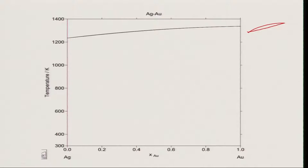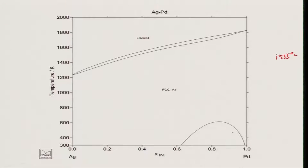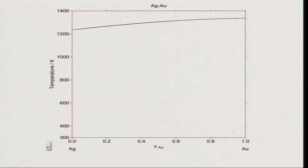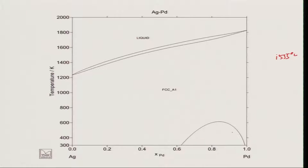The phase diagram between gold and silver looks like a lens — an isomorphous type — but because the melting temperature difference between gold and silver is very small, you do not see the loop very clearly. Between silver and palladium, you again have a binary phase diagram of isomorphous type. Palladium melts at a higher temperature, about 1555 degrees Celsius, and there seems to be a miscibility gap or dome in the palladium-rich region at low temperature, but it does not make much difference.